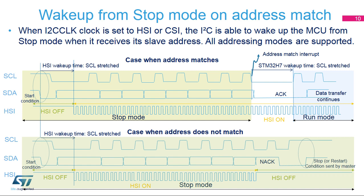The I2C peripheral supports Wake Up From Stop mode on address matches. To do this, the I2C peripheral clock must be set to the HSI or CSI oscillator. Only the analog noise filter is supported when the Wake Up From Stop feature is enabled. All addressing modes are supported. When the device is in stop mode, the high-speed internal oscillator is switched off. When a start condition is detected, the I2C peripheral enables the high-speed internal oscillator to receive the address on the bus. After an address is received in stop mode, a Wake Up interrupt is generated if the address matches the programmed slave address.